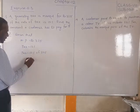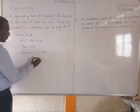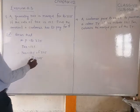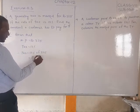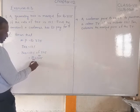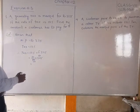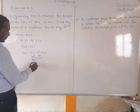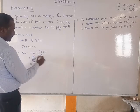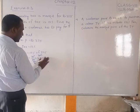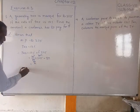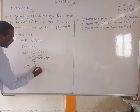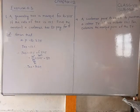Tax is equal to 12 divided by 100, multiplied by 325. Working this out: 12 by 100 into 325 equals 39. So the tax to be paid is ₹39 rupees. Now the total amount the customer has to pay is the marked price plus the tax.